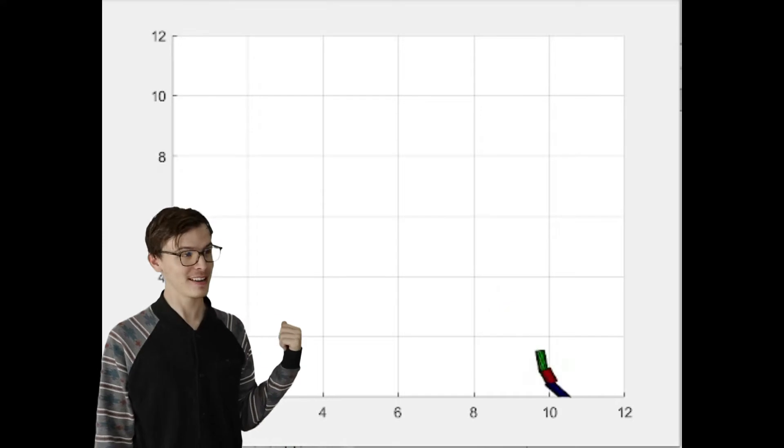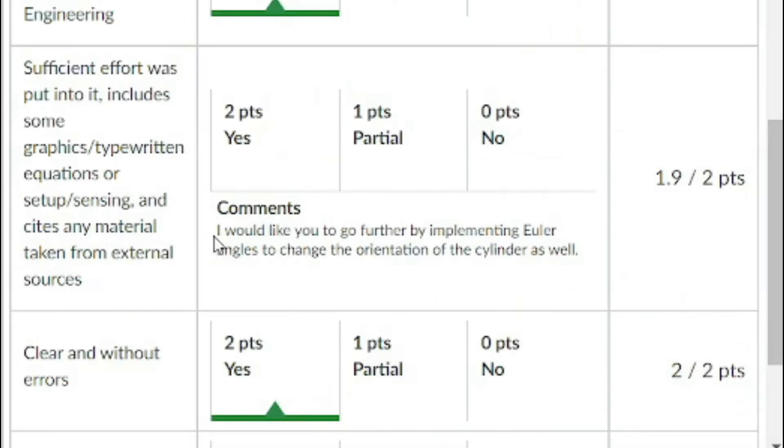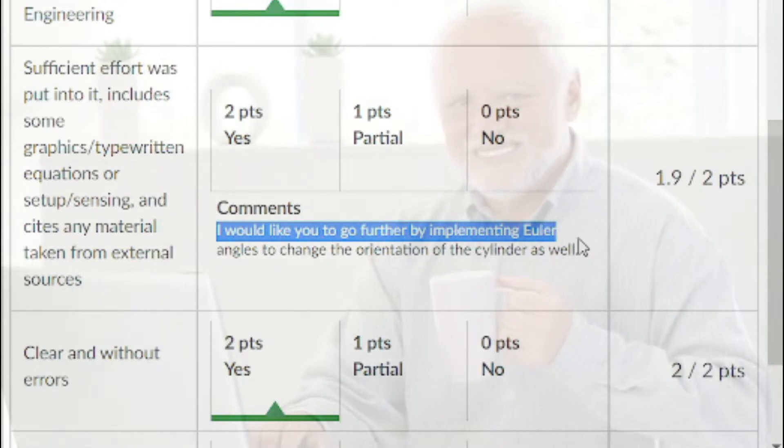I don't know what this is, but it's kind of hot. Yet, despite all this coolness, I lost precisely 0.1 points because they would have liked to see me implement Euler angles.